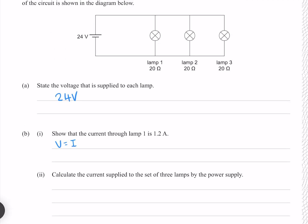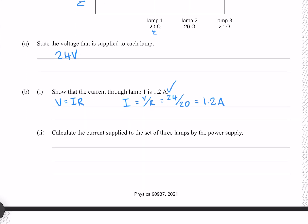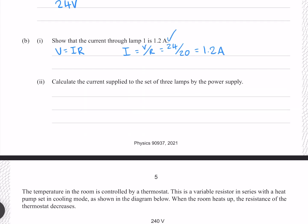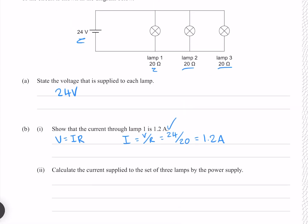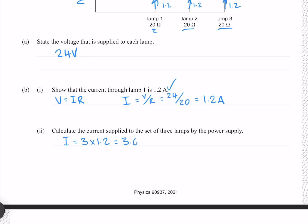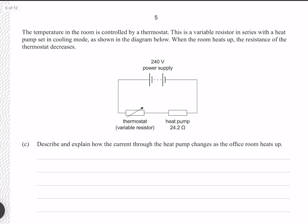Show that the current through lamp one is 1.2 amps. Using V = IR, which relates voltage across the lamp, current through the lamp, and resistance of the lamp, we rearrange for current by dividing both sides by R. With a voltage of 24 V and resistance of 20 ohms, this gives exactly 1.2 amps. Calculate the current supplied to the set of three lamps by the power supply. Since all three lamps are identical at 20 ohms, the current through each is 1.2 amps, so multiplying 1.2 by 3 gives exactly 3.6 amps.